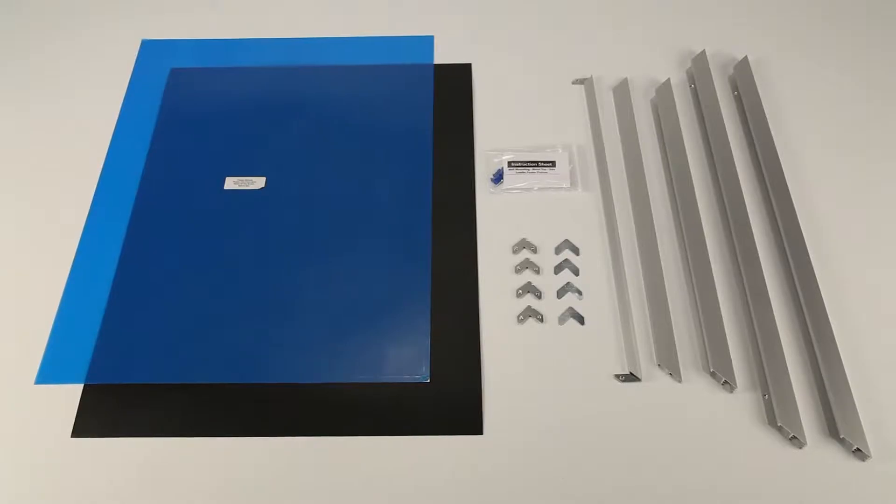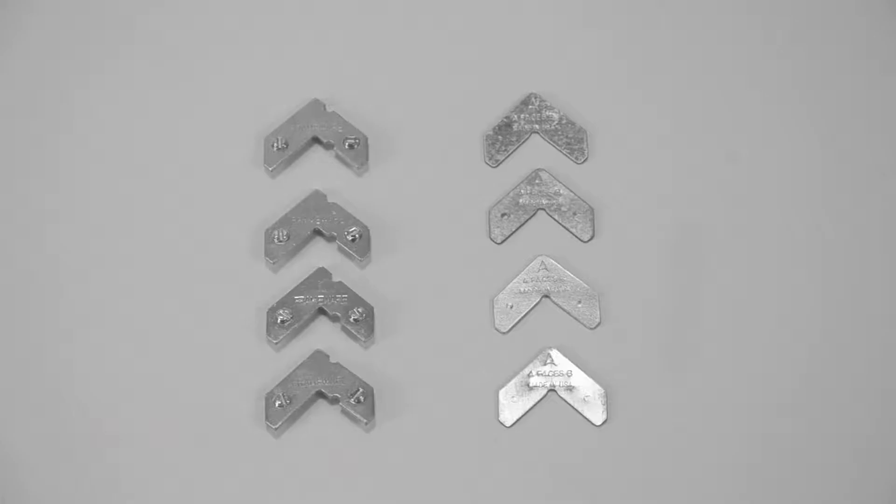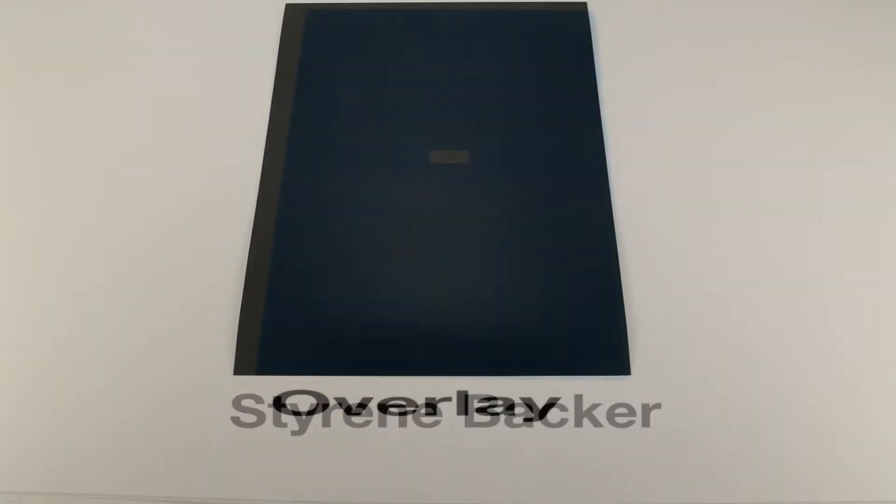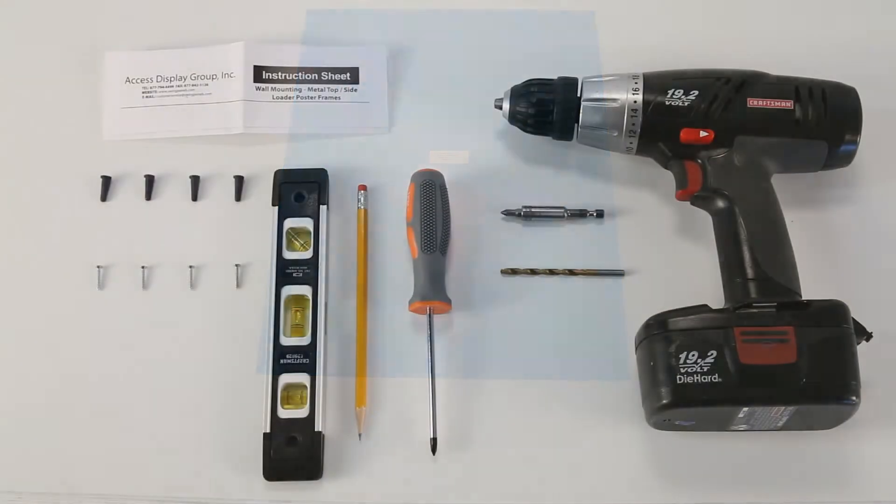Once you've taken all the materials out, there should be 5 aluminum frame rails, 4 corner joining angles consisting of 8 steel pieces, a backing board, a clear plastic protective overlay with removable blue film, and wall mounting hardware.